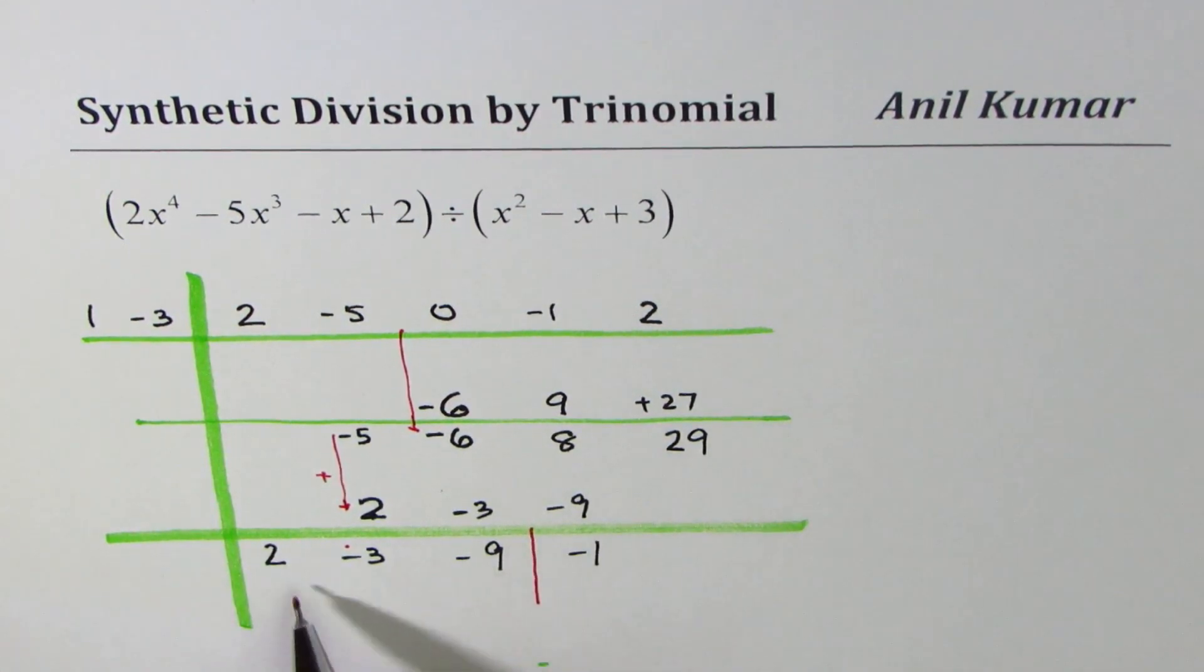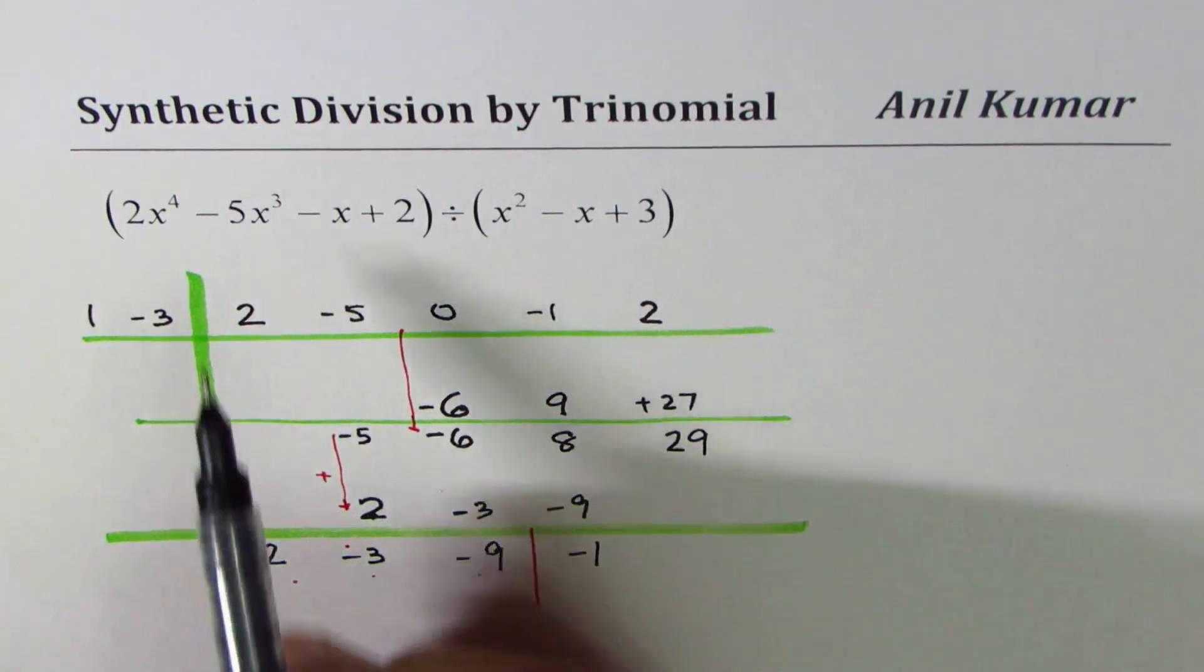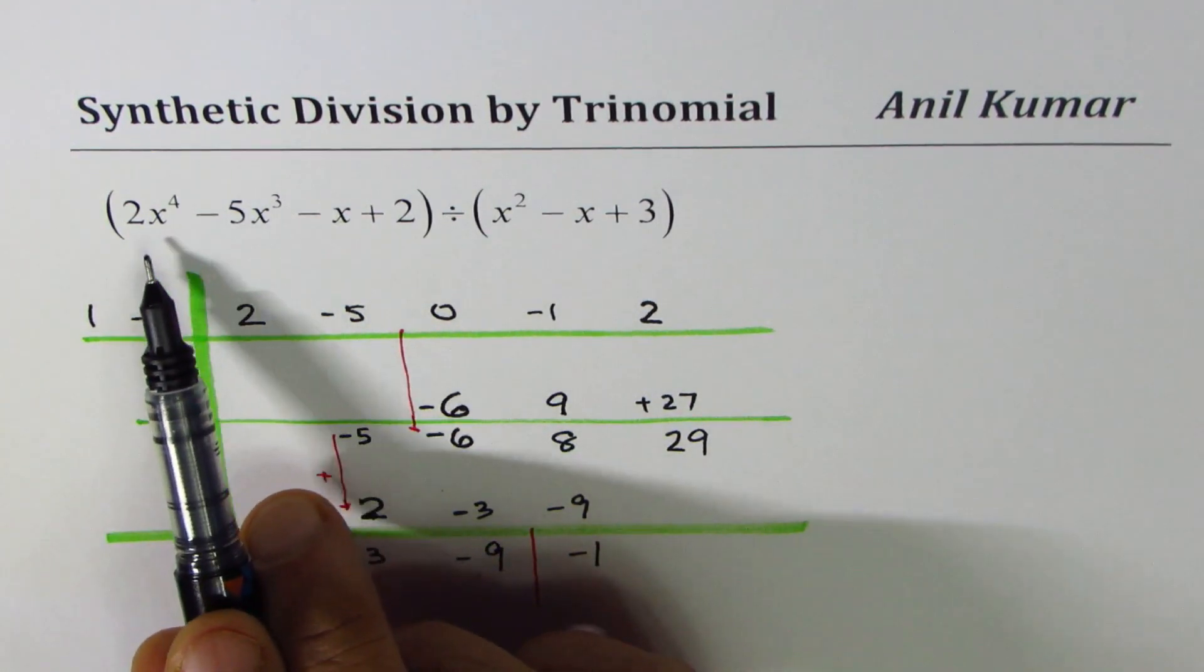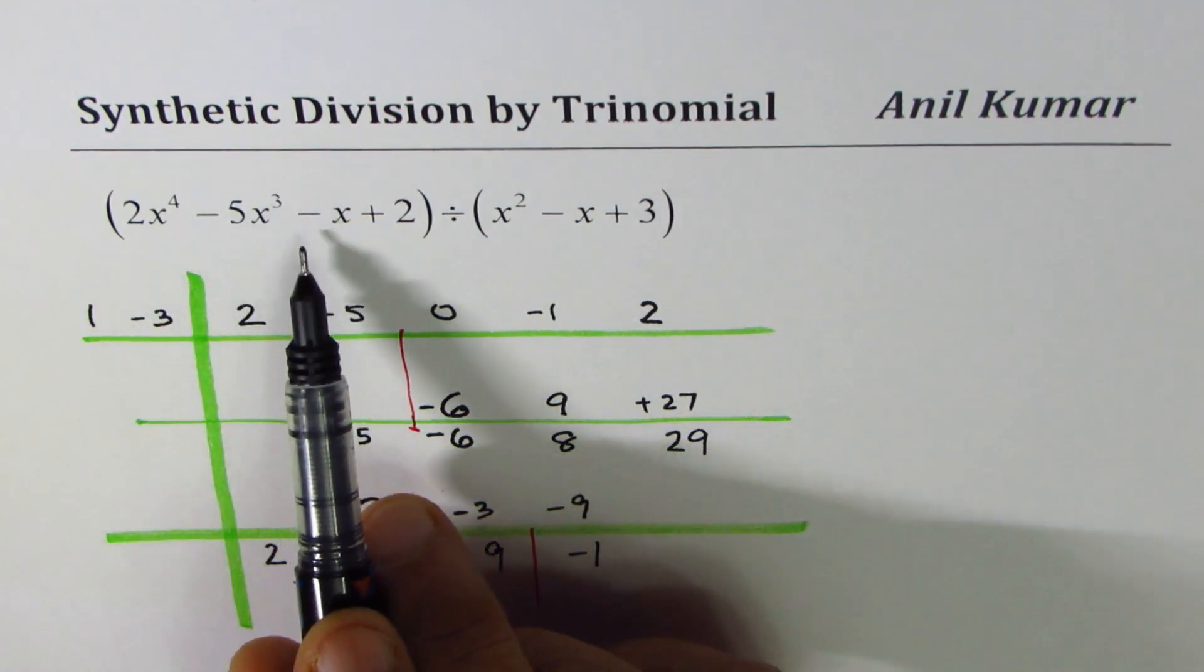These three terms correspond to the quotient over degree 2. 4 minus 2 gives you 2, and that's the part of the remainder.